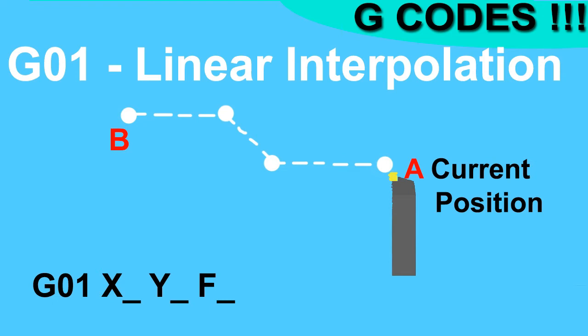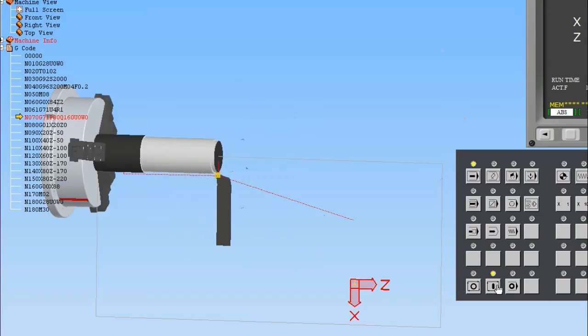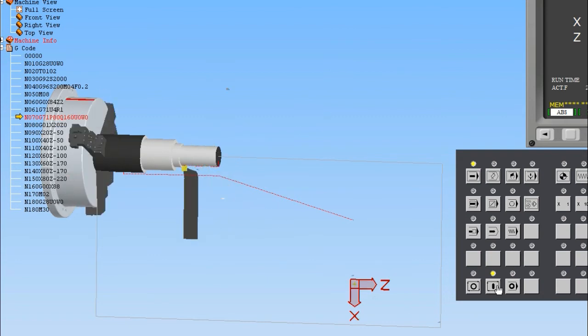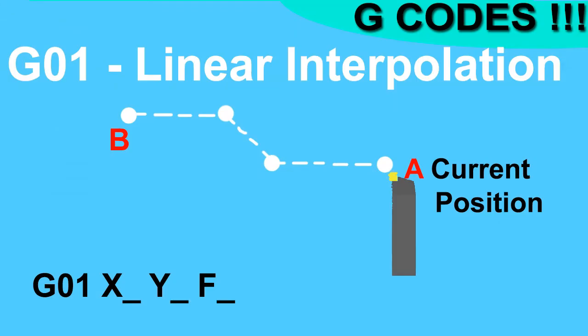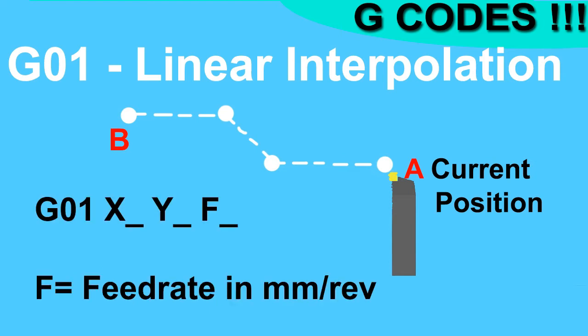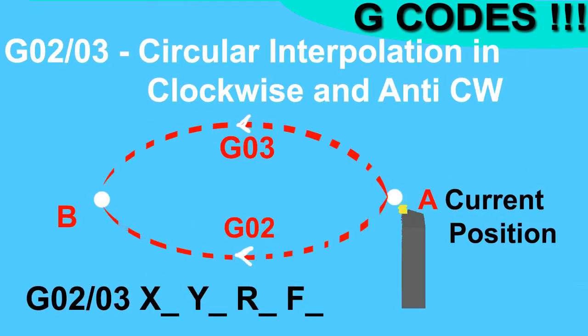G01 is used for linear interpolation. This code is used when you want to do cutting in a straight line. For cutting you don't want the tool to move at maximum speed, so we have to provide a feed rate either with G01 or before G01. In turning operations, feed rate is provided in millimeters per revolution — that is, how many millimeters we want to cut in one revolution. In the example of G01, we provide X and Z as the final coordinates and F for the feed rate.